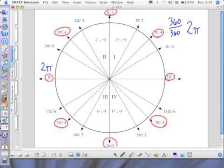So if 2 pi is the whole circle, then half of that is half the circle. What's 2 pi over 2? Pi.